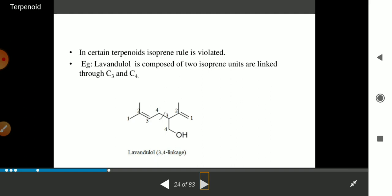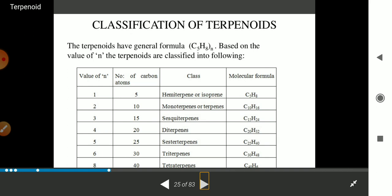In certain terpenoids, the isoprene rule is violated. For example, lavandulol is composed of two isoprene units linked through C3 and C4. If you cut this bond, you will get two units of isoprene.